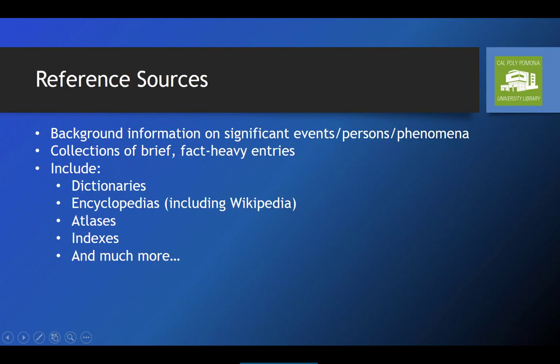Finally, we have reference sources. As the significance of events or phenomena become more and more apparent, people need sources that will provide them with the basic facts in order to familiarize themselves with the topic. Reference sources such as dictionaries, encyclopedias including Wikipedia, atlases, and indexes provide brief, basic information on a topic to introduce a researcher to it. Entries in a reference source tend to be short and factually heavy. They may involve a general collection of facts on almost any topic — think Wikipedia — or they may be focused on a specific topic or discipline.